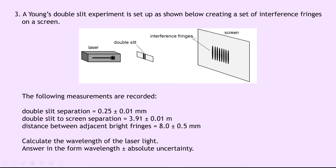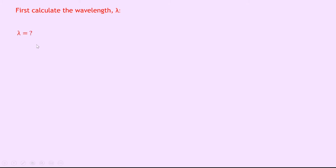Question 3 says a Young's double slit experiment is set up creating a set of interference fringes on a screen. The following measurements are recorded: the double slit separation is 0.25 plus or minus 0.01 millimetres, the double slit to screen separation is 3.91 plus or minus 0.01 metres, and the distance between adjacent bright fringes is 8.0 plus or minus 0.5 millimetres. We need to calculate the wavelength of the laser light and answer in the form wavelength plus or minus absolute uncertainty. So we need both the wavelength and the absolute uncertainty.